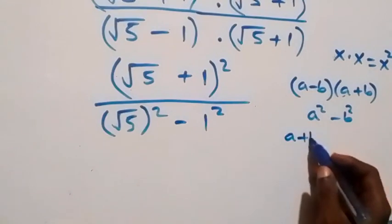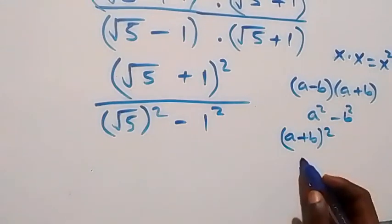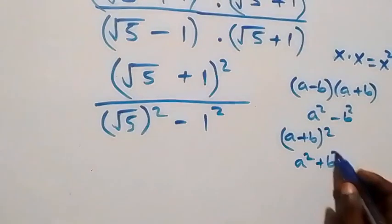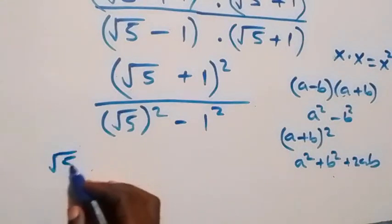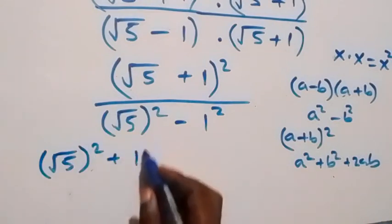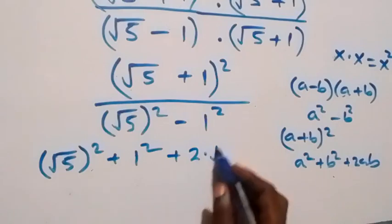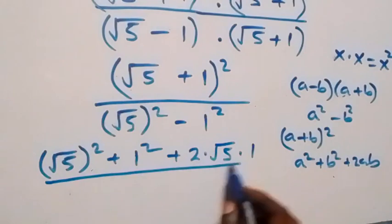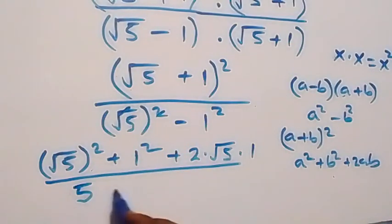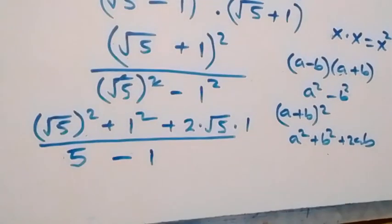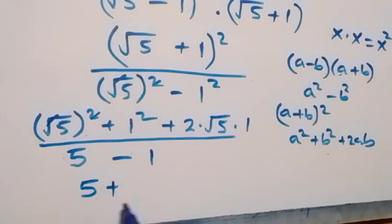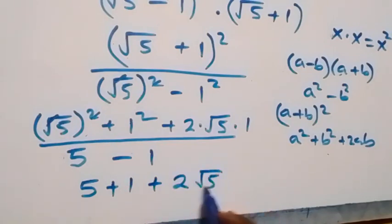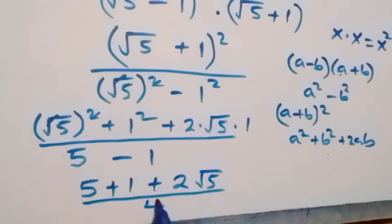Now here, the expansion in the numerator follows from when we have a plus b squared, which we can write as a squared plus b squared plus 2ab. So this becomes root 5 squared plus 1 squared plus 2 times root 5 times 1. Divided by — here the square cancels the square root, giving us 5, then minus 1 squared which is 1. So we have 5 plus 1 plus 2 root 5 over 5 minus 1, which gives 4.